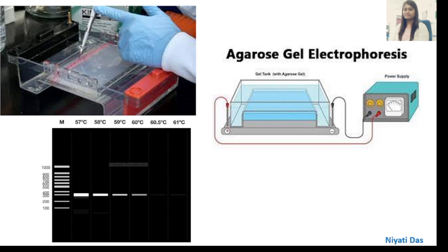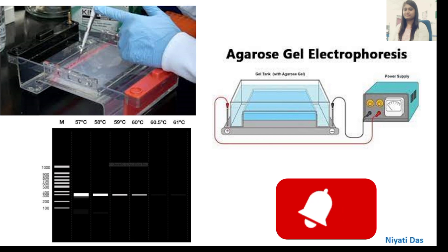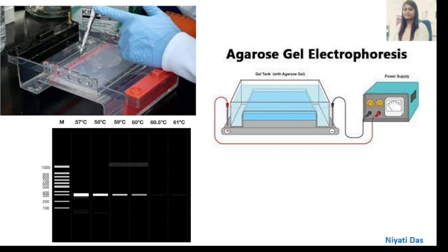In this particular example, at 59 degrees Celsius the amplification is very specific with low primer dimer formation. Therefore, 59°C is identified as the optimal annealing temperature for conducting this PCR reaction.